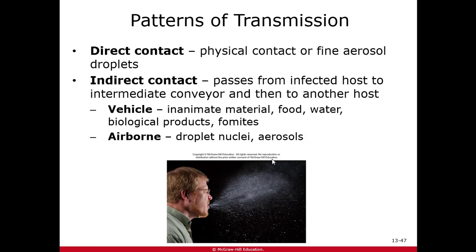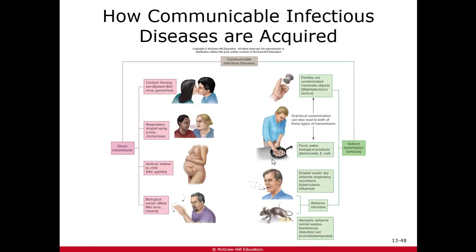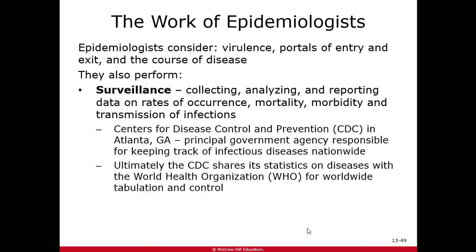This slide shows how communicable diseases can be acquired — some through direct transmission, some through indirect contact with inanimate objects or using animals to transmit pathogens from one place or person to another. Epidemiologists constantly look at virulence factors, portals of entry and exit, how diseases are spreading, and how to stop or slow the spread. They conduct constant surveillance looking at rates of occurrence, mortality rates, morbidity rates, and transmission sequences. The CDC in Georgia does this for the United States, and they've been heavily relied on for tracking COVID-19.